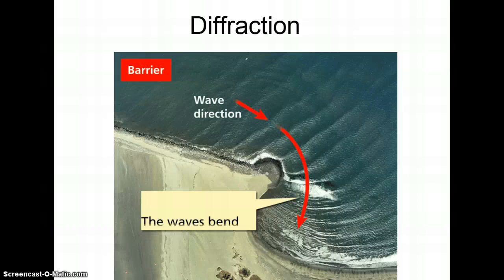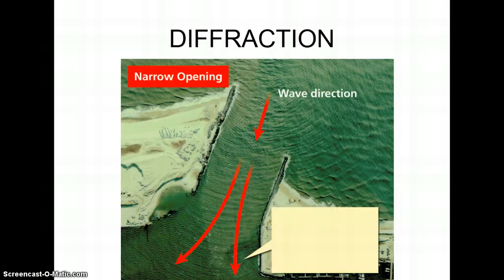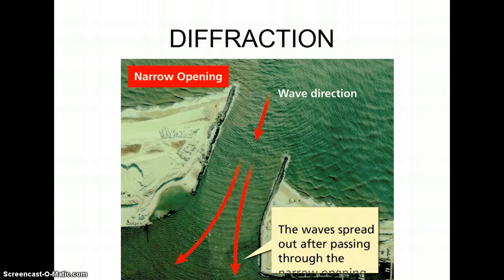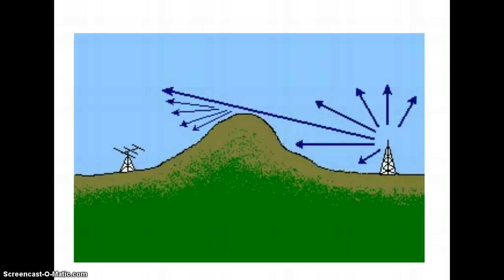Here you can see waves diffracting around the barrier in the ocean, through a narrow opening, over the radio tower. They go over the mountain and they bend. When you're standing outside of a room and you can hear somebody talking, the sound waves are leaving, going through the door opening and bending around. They're diffracting. Same medium.